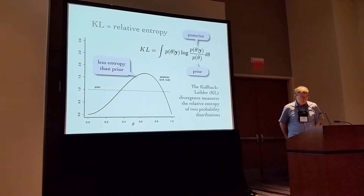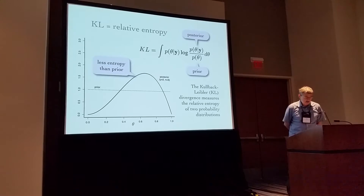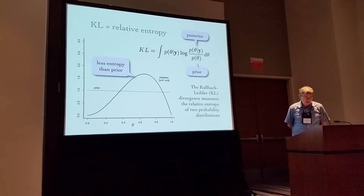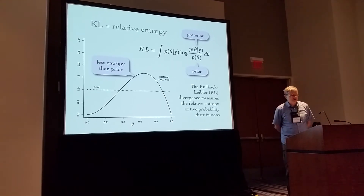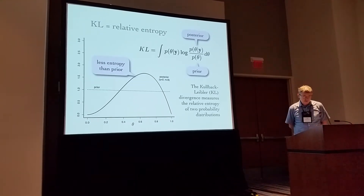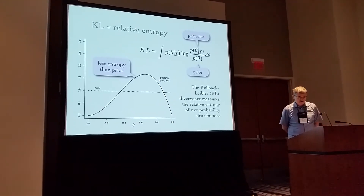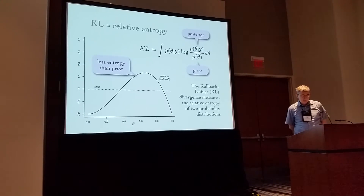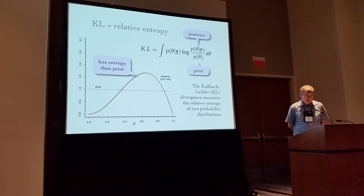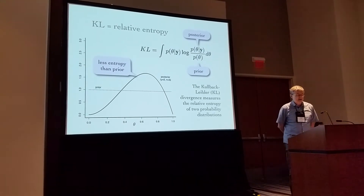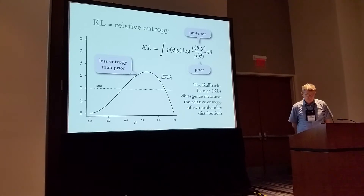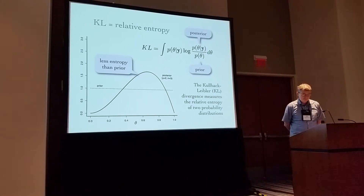The Kullback-Leibler divergence, or KL divergence, measures the relative entropy of two probability distributions. The relative entropy of the posterior distribution compared to the prior directly measures the amount of new information coming in through the data.